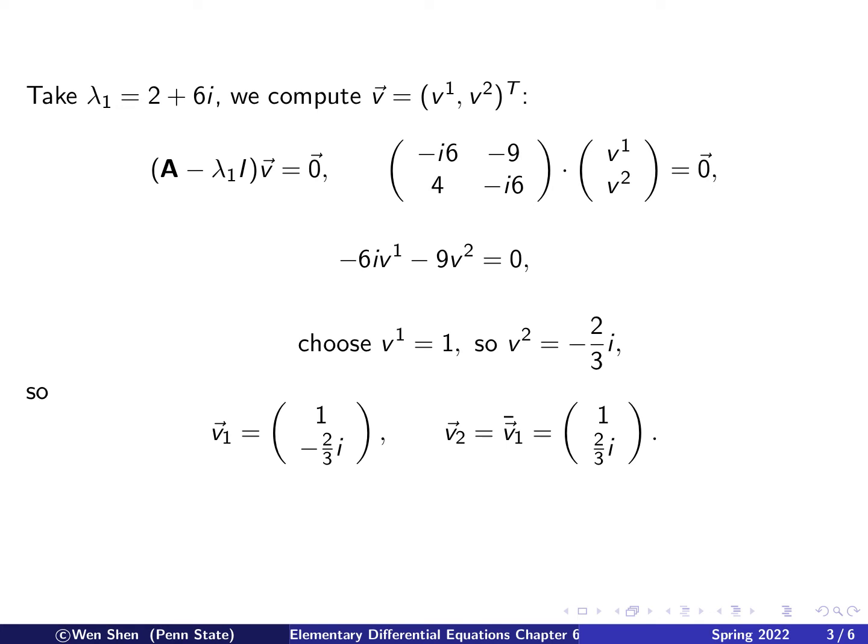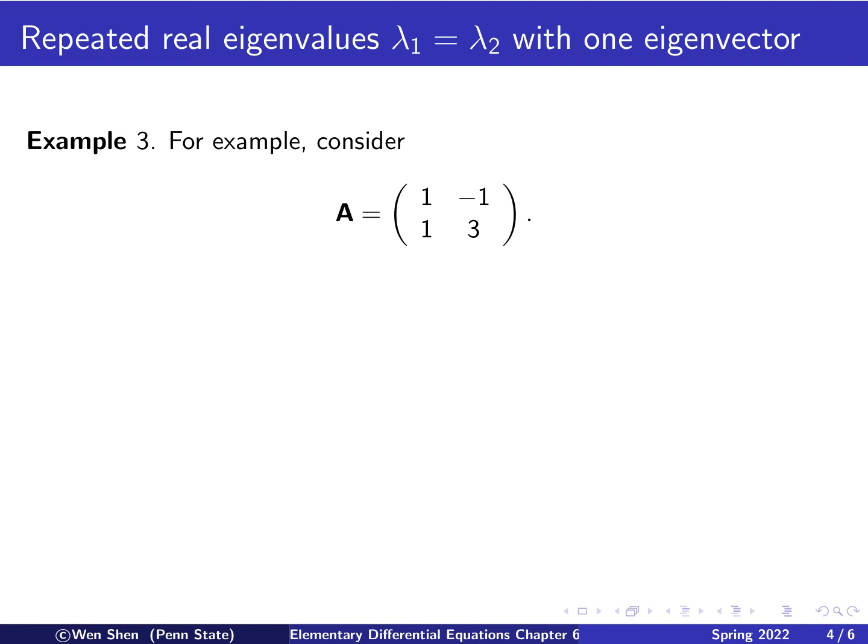And then we get the eigenvector. Let's call the eigenvector is V1 associated with lambda 1. Sorry, it's a bit confusing, the notation here. And then this will be 1. That's the first component. The second component is negative 2 over 3i. Then for the other eigenvalue, lambda 2, which is 2 minus 6i, the eigenvector, let's call it V2, we don't need to go through this calculation. We can just take V1, which we computed here, and take the complex conjugate. So for each element. So for 1, we'll just get 1. And then for this, the imaginary part, we'll flip the sign. So we'll get 2 over 3i.